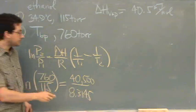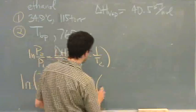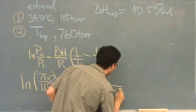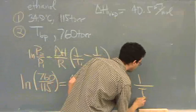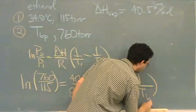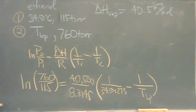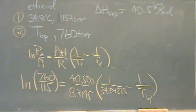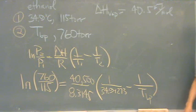Your R is in joules. 1 over T1 — T1 is 34.9 plus 273 — minus 1 over T2. That's what I'm looking for: T of the boiling point. Solve for that. Just make sure you can do that. The answer should be 77 Celsius. After you get the Kelvin answer, convert to Celsius.